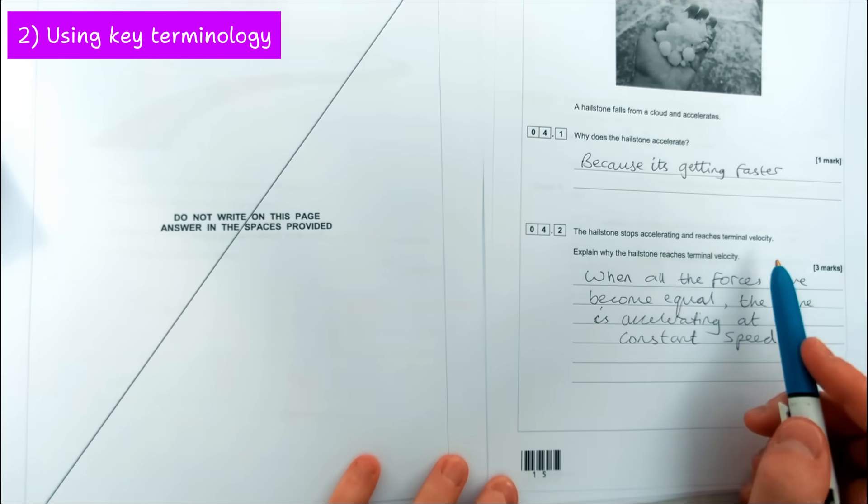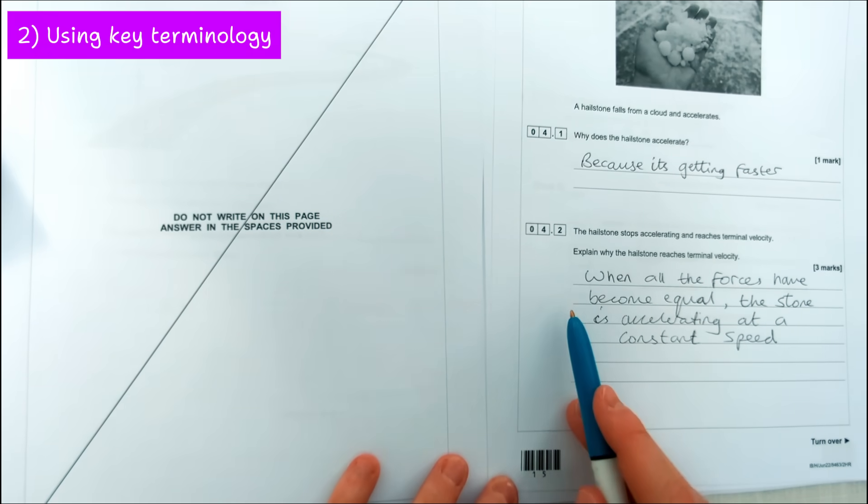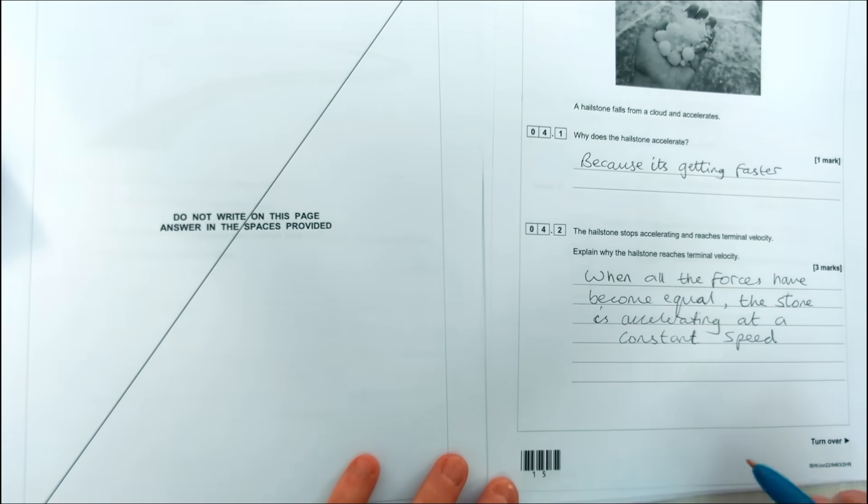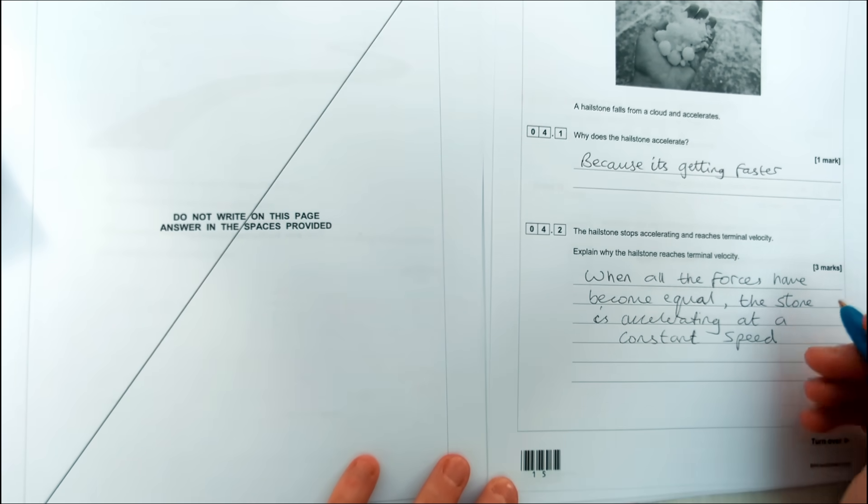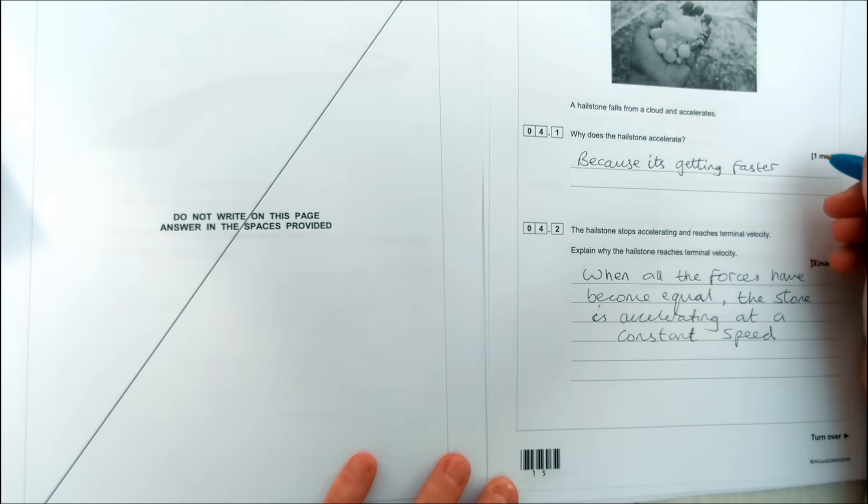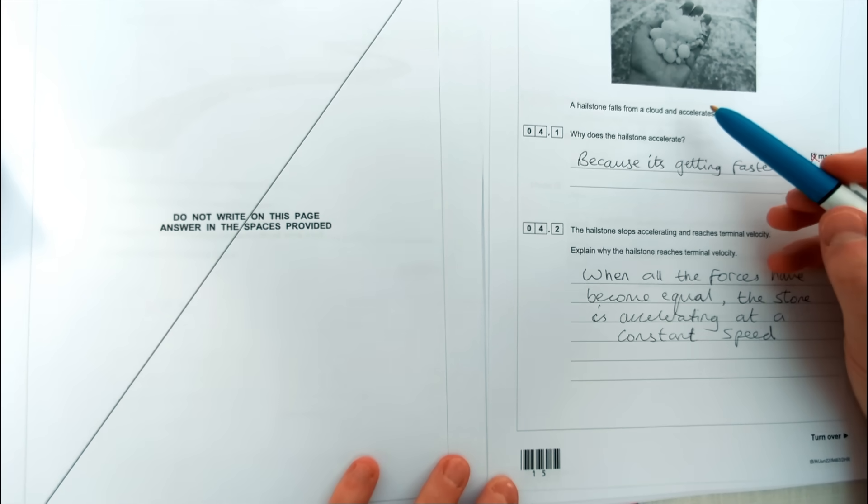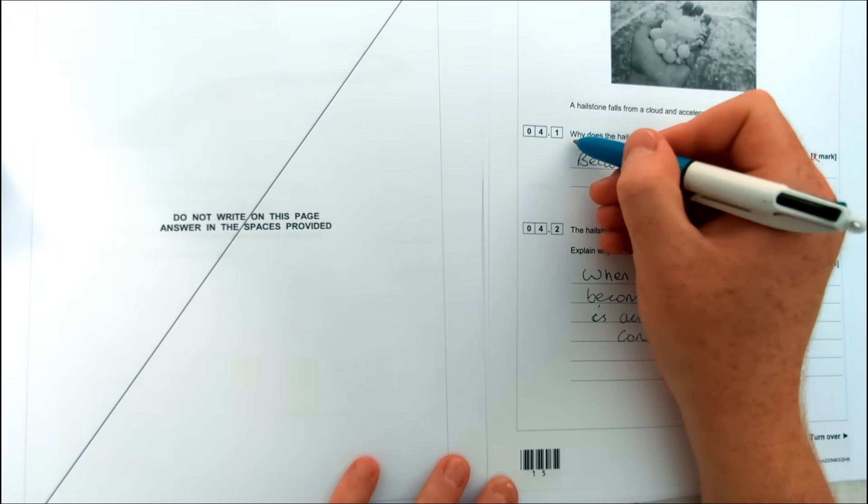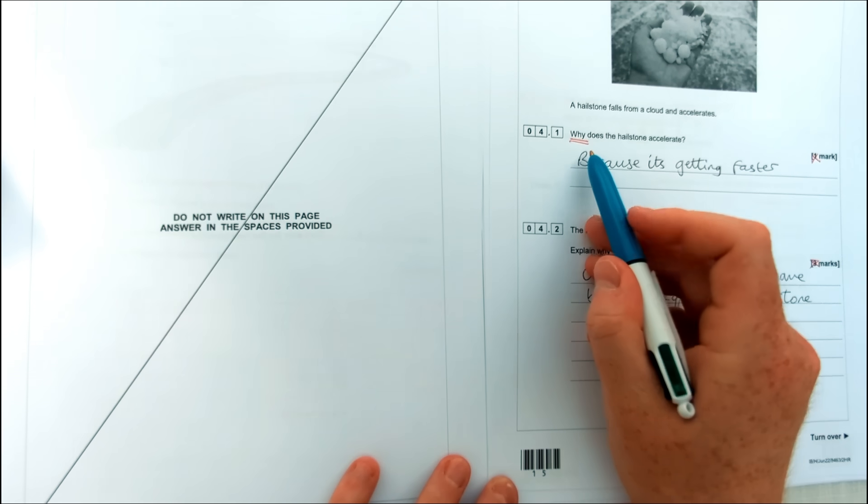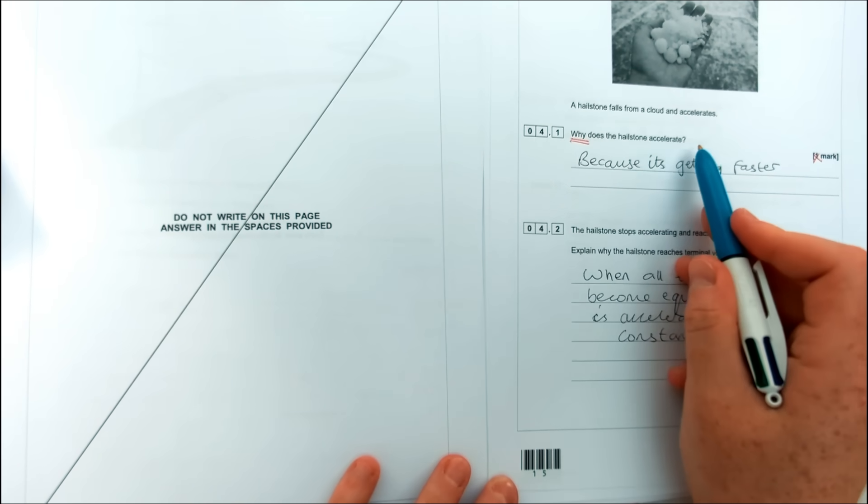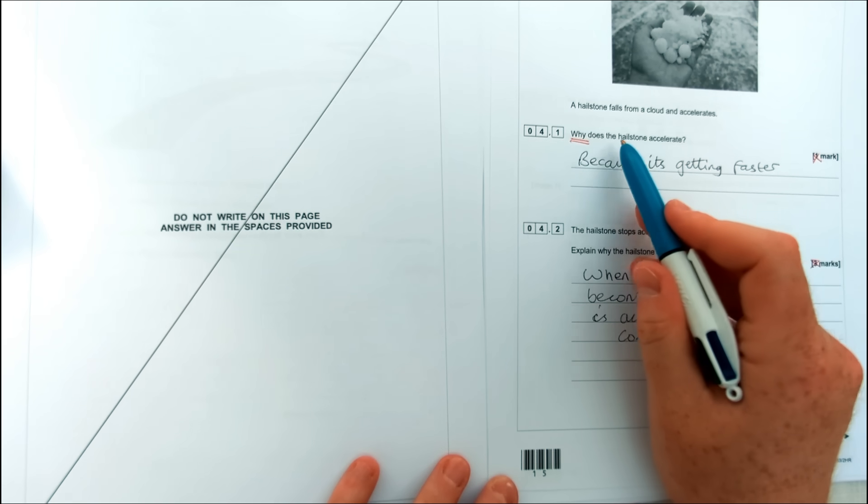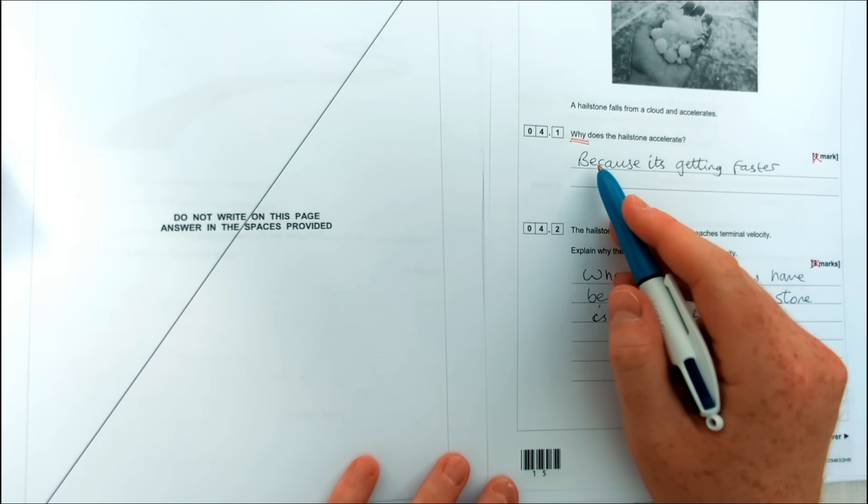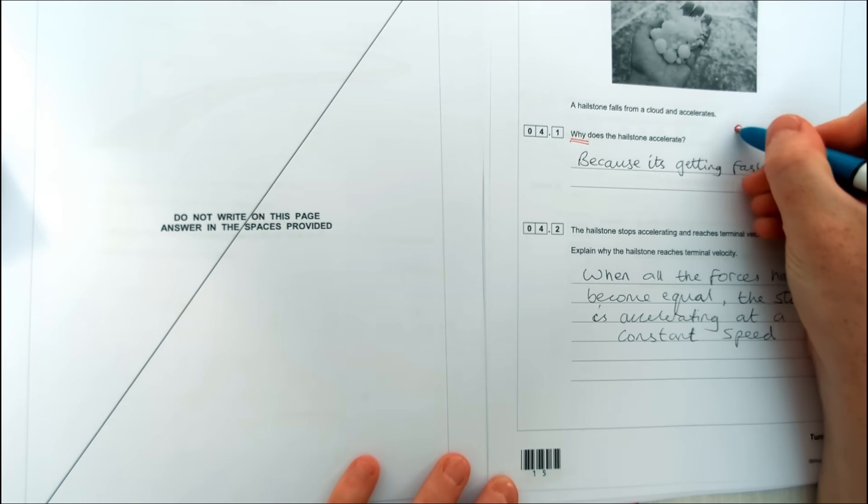This question is all about terminal velocity and it's really important you know how to explain how an object reaches terminal velocity. In this question the person has made a good attempt at talking about each of these two questions but unfortunately would get basically zero marks on either of them because they haven't been specific enough or clear enough with their language. So the first question is all about a hailstone and why does it accelerate. This person has essentially described what acceleration is and says it's getting faster. Now while that is true, it's not an explanation answer for this question.